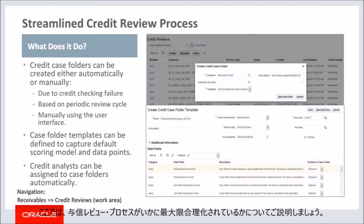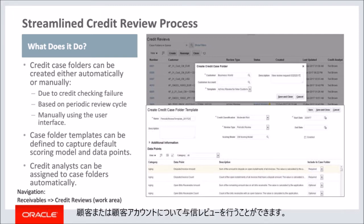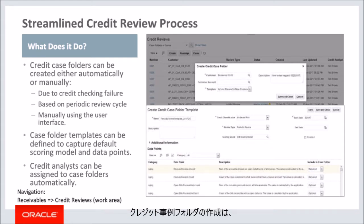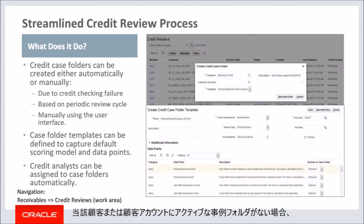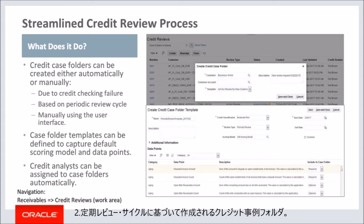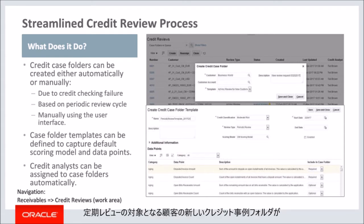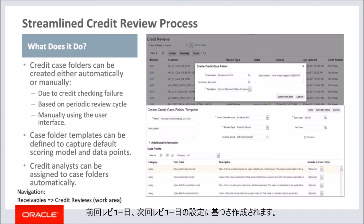Now let's discuss how the credit review process is streamlined. You can conduct credit reviews on a customer or customer account, and each review is represented by a credit case folder. Credit case folder creation is either automatic or manual. First, credit case folders can be created due to credit checking failure — when a customer or customer account fails a credit check and there is no active case folder, a new one will be created automatically. Second, credit case folders can be created based on a periodic review cycle. The periodic review process creates new credit case folders for customers due for periodic reviews based on the periodic review cycle, last review date, and next review date settings. You can schedule this process to be run on a regular basis.